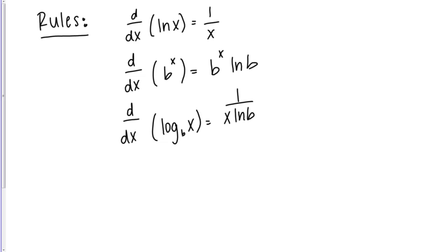In this video we're going to go over a few relatively simple examples that make use of the derivative rules for log and exponential functions. The rules are written here. The first is the derivative of the natural log function equals 1 over X. The second is that the derivative of B to the X equals B to the X times natural log of B, where B is a positive number not equal to 1. Finally, the derivative of log base B of X equals 1 over X times the natural log of B.